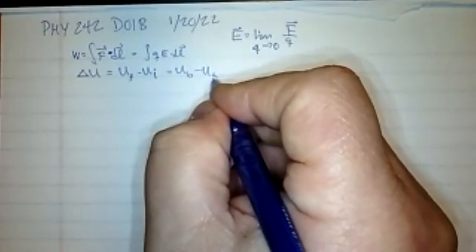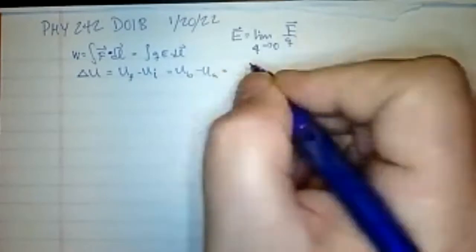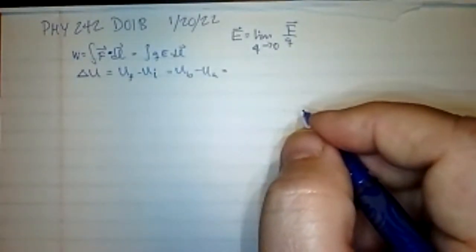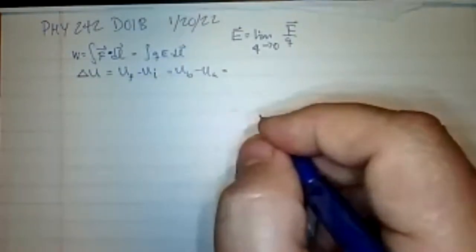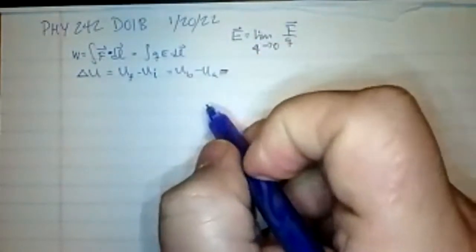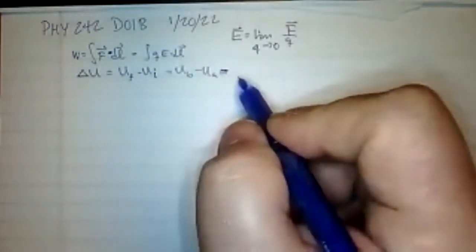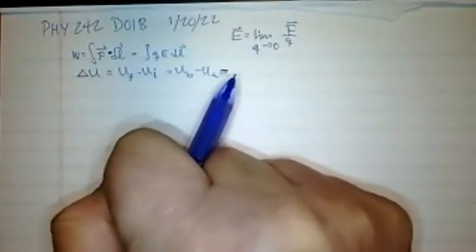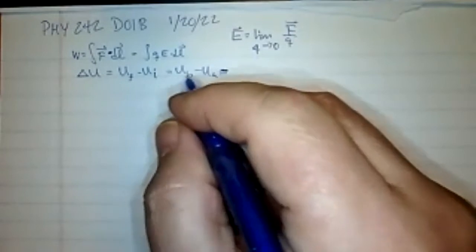The change in potential energy, ΔU = U_B − U_A, equals the negative of the work done. If potential energy increases, that's a result of someone doing work on you — like lifting you higher. So ΔU equals the negative of the work done by you, which is the negative of Q times E times distance.